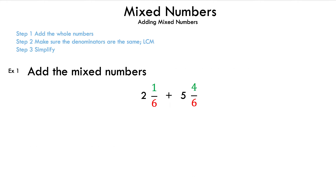Now let's take a look at example 1. Before we do that, let's read the steps. Step 1: add the whole numbers. Step 2: make sure the denominators are the same — we can use the LCM, or least common multiple, to find the common denominator. And step 3: simplify.